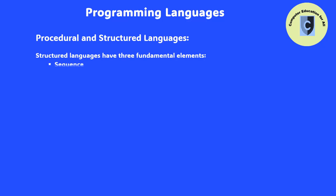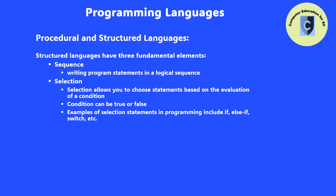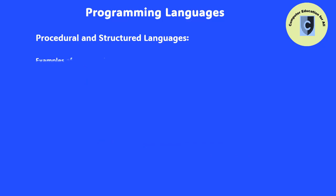Sequence means writing program statements in a logical sequence. Each step in the sequence must logically progress to the next without producing any undesirable effects. Selection allows the selection of any number of statements based on the result of evaluation of a condition, which may be true or false. Examples of statements that implement selection in programming are if, else if, switch, etc. Repetition, or loops, means executing one or more statements a number of times until a condition is satisfied. Repetition is implemented in programs using statements such as for and while loops.